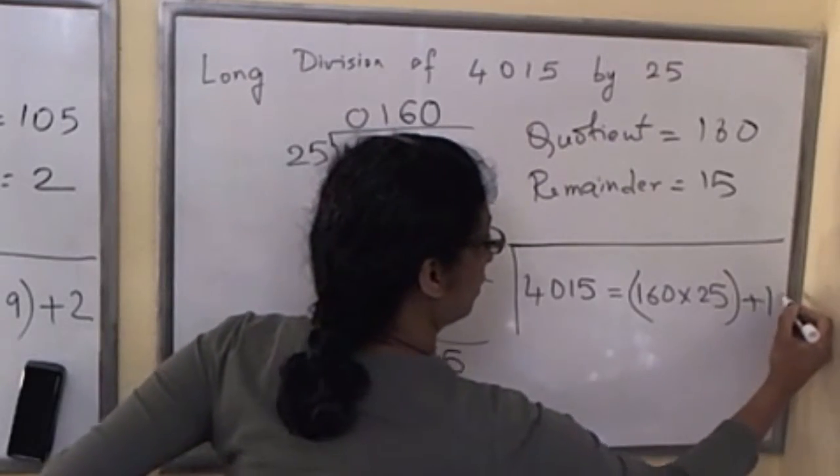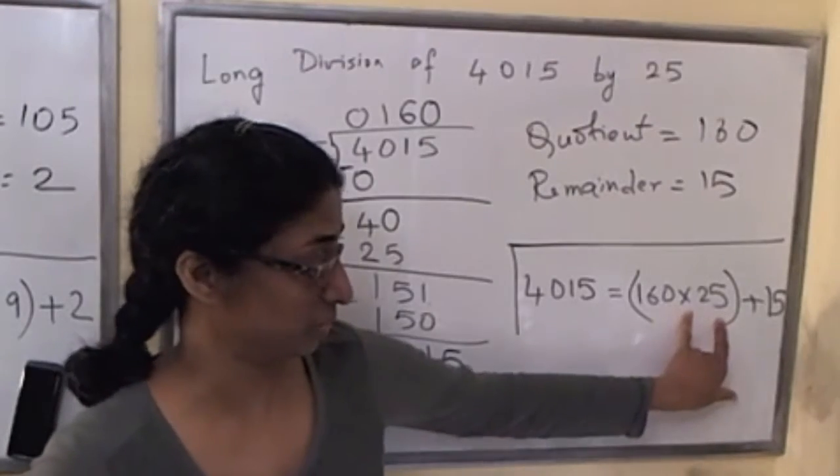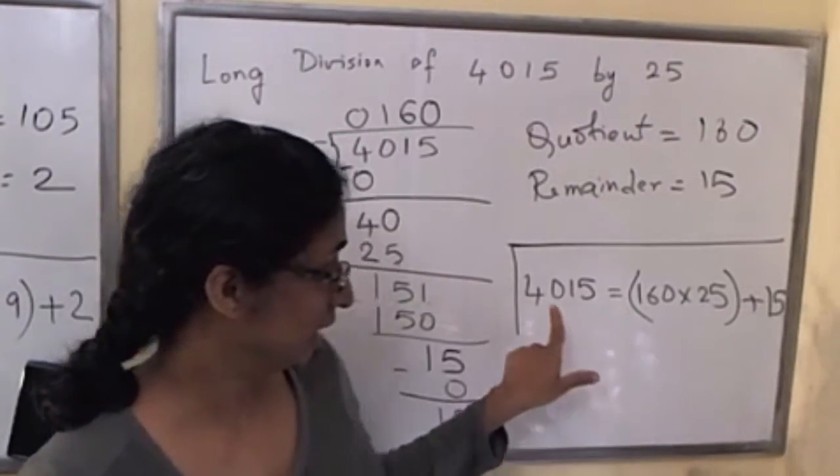It would be a good idea for you to multiply out these numbers, add 15, and make sure you do get 4015.